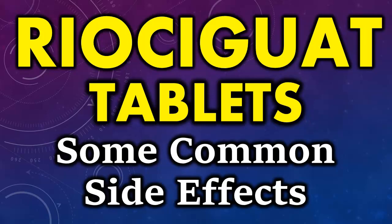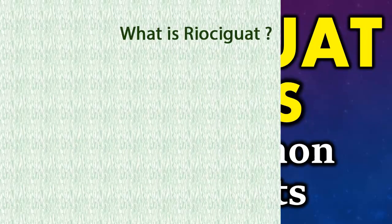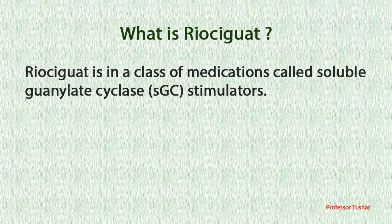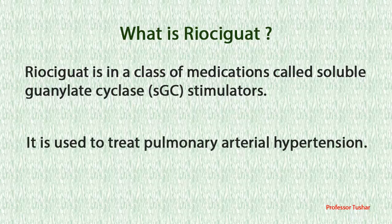Riosiquat tablets. Some common side effects. What is Riosiquat? Riosiquat is in a class of medications called soluble guanylate cyclase (SGC) stimulators. It is used to treat pulmonary arterial hypertension.